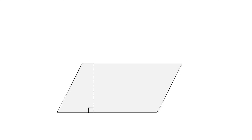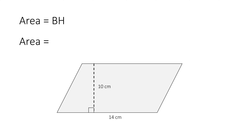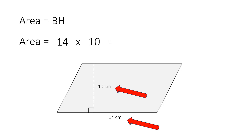The area of a parallelogram is base times height. Let's throw in some numbers: the base will be 14 centimeters and the height will be 10 centimeters. So we have 14 centimeters multiplied by 10 centimeters, which equals 140 centimeters squared.